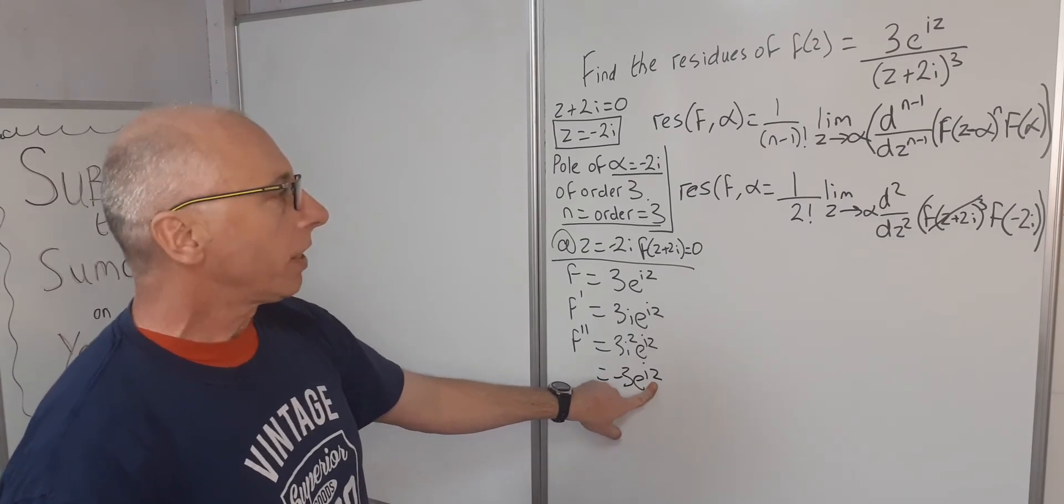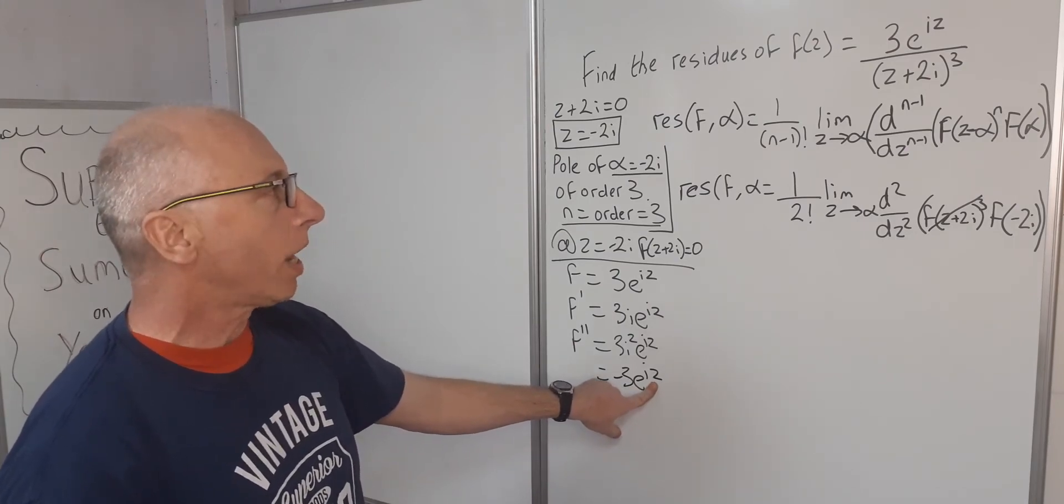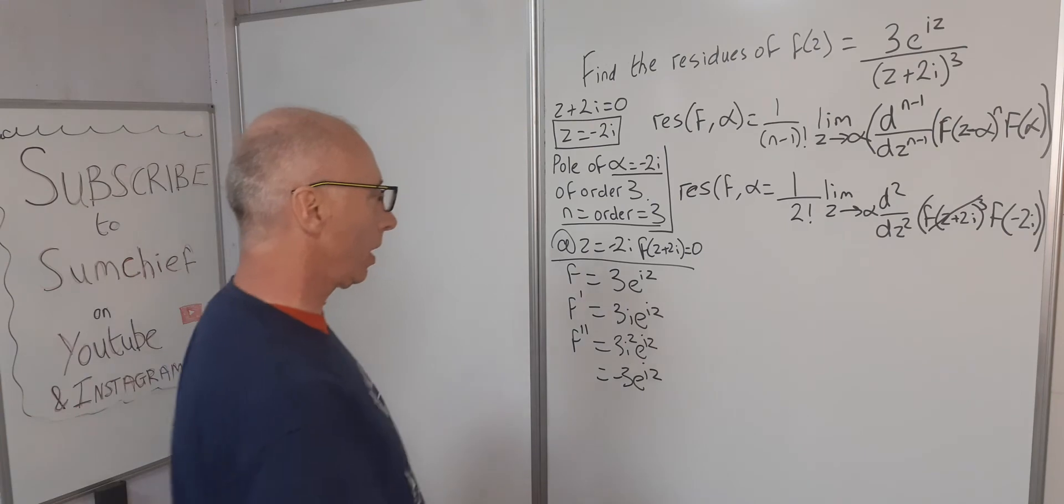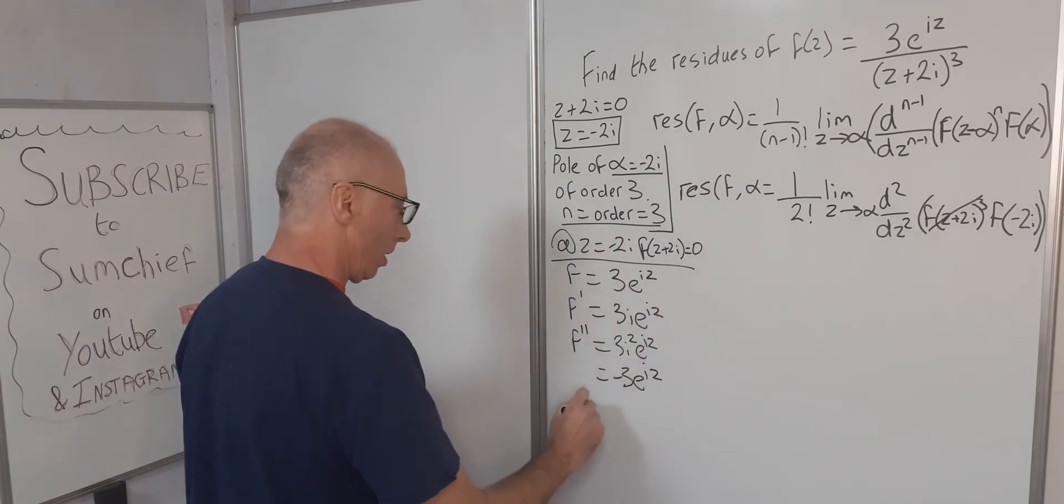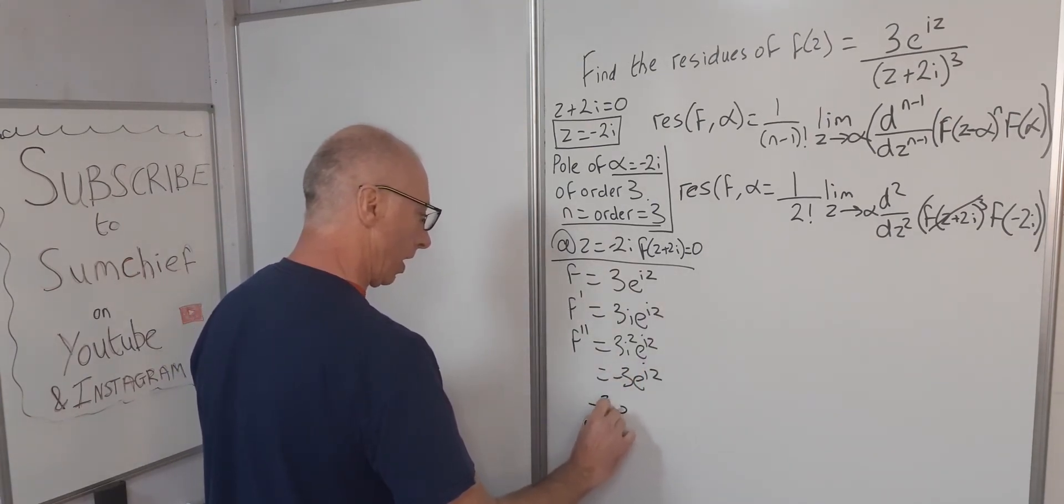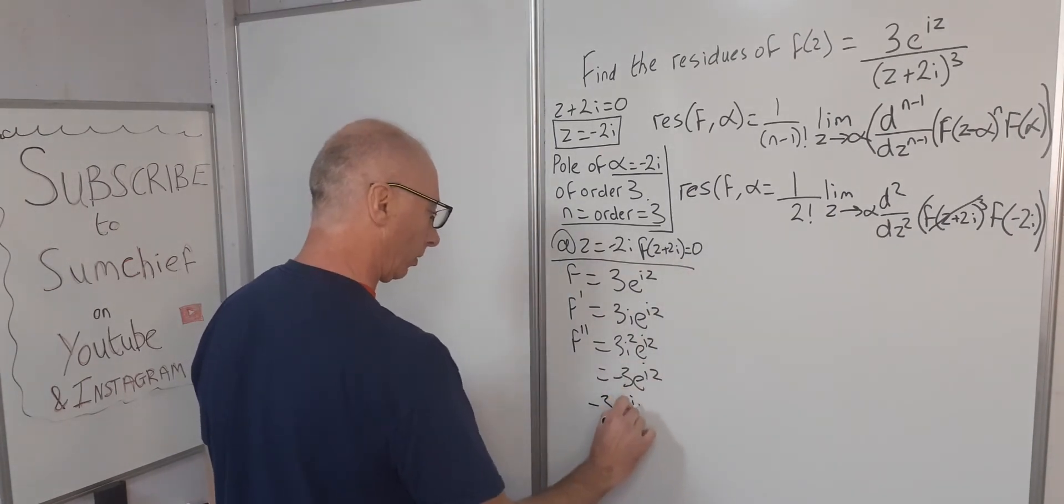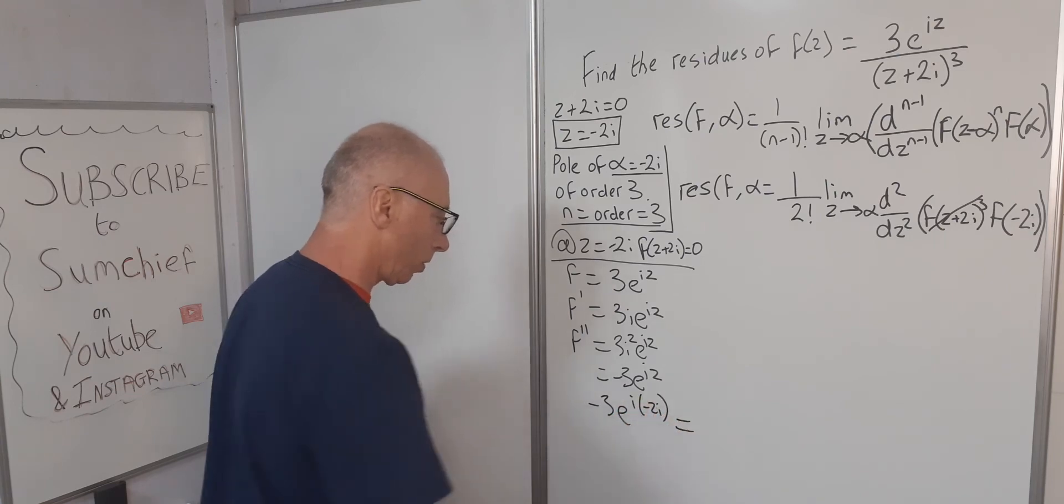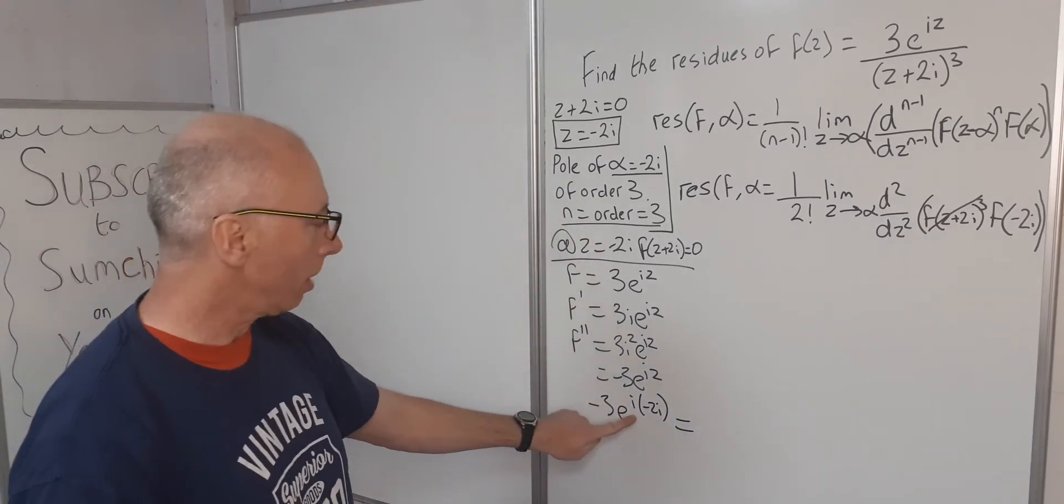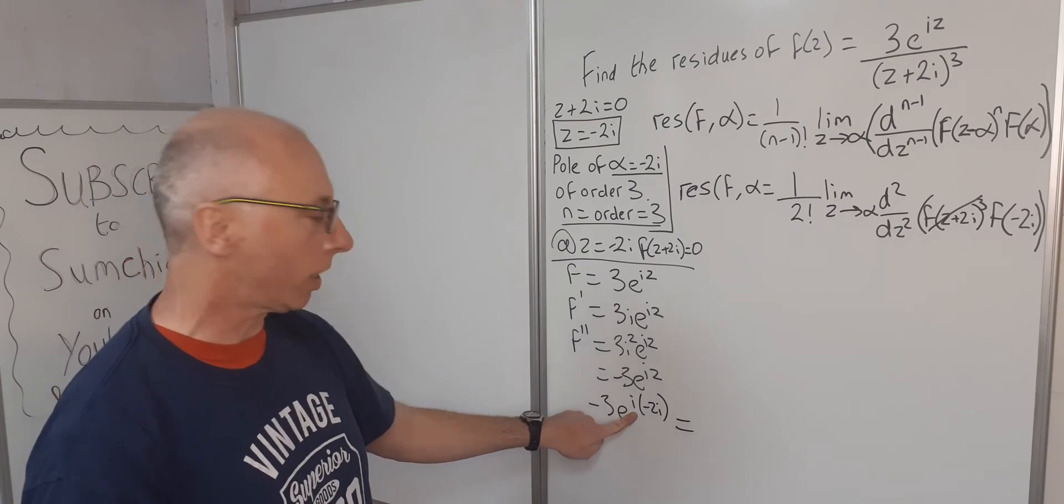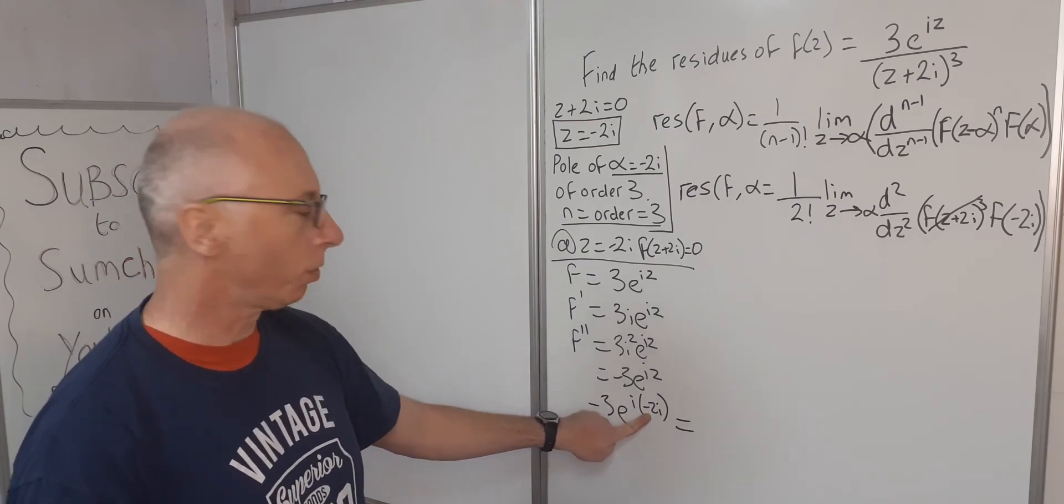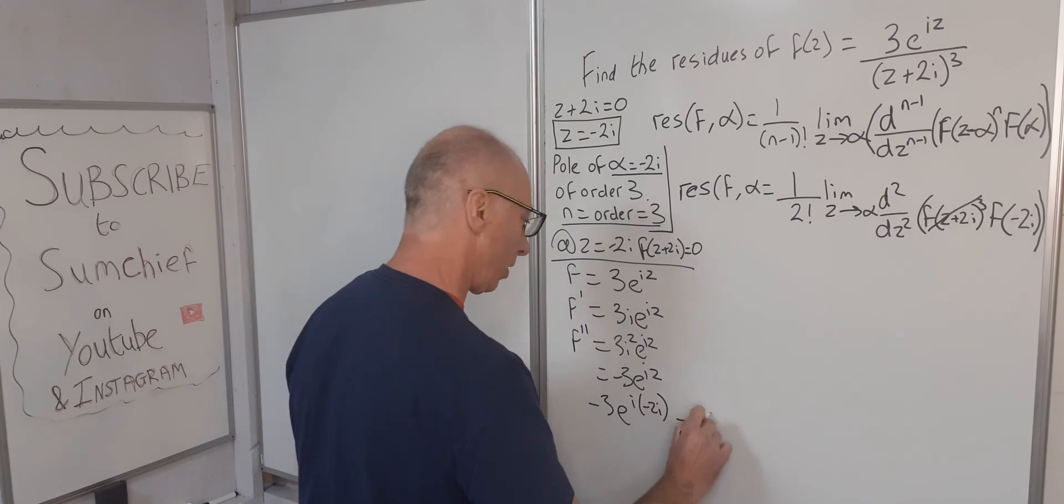So -3e^(iz) at -2i. So let's plug that in now. We now get -3e^(i times -2i), which equals -2i times i. Well, i² is -1 times -2 is just +2. So that gives us -3e².